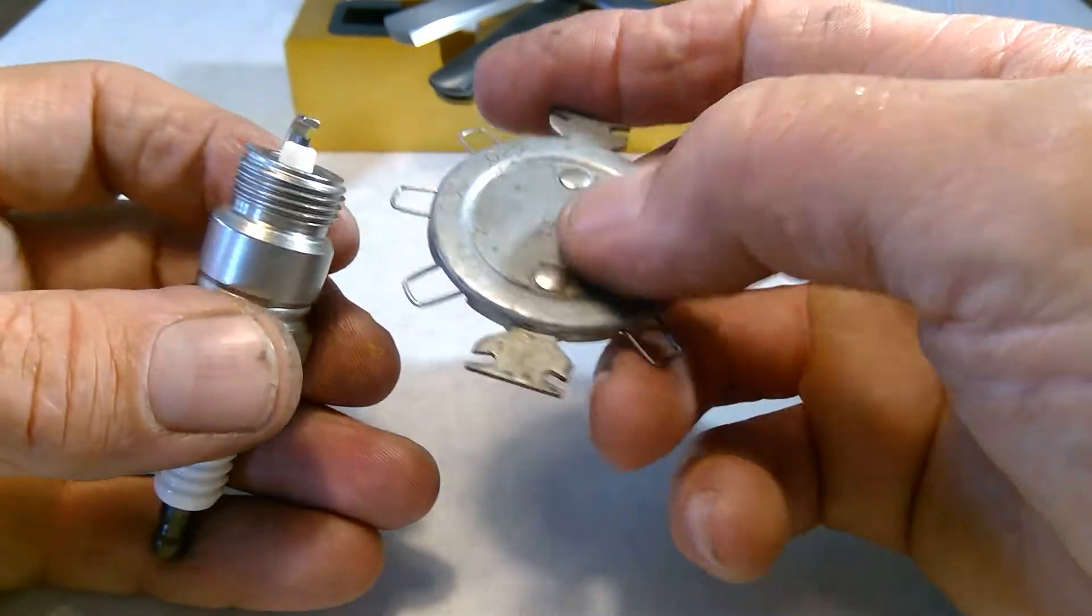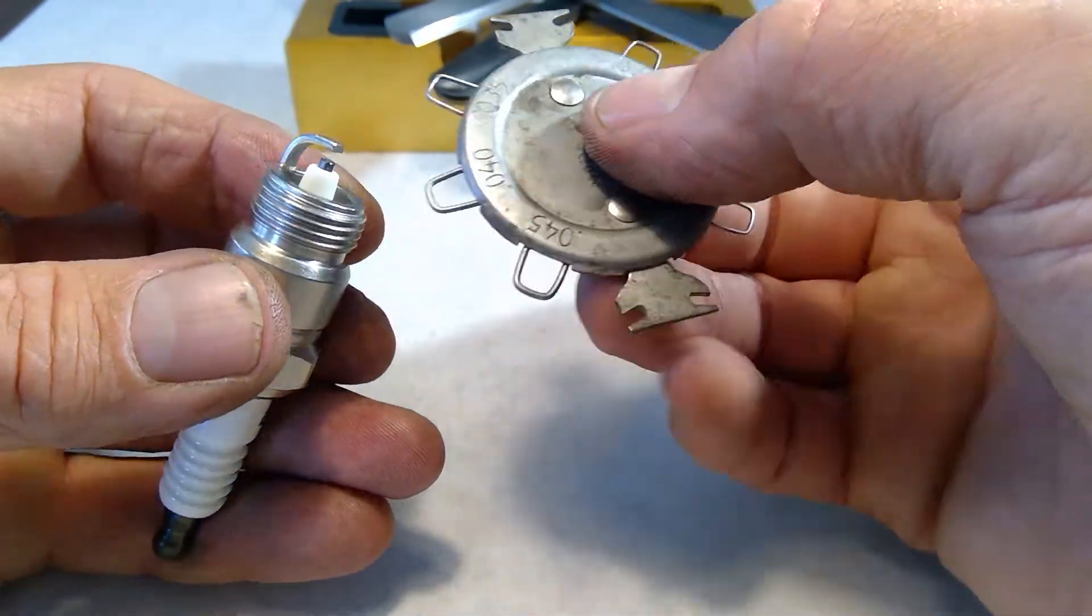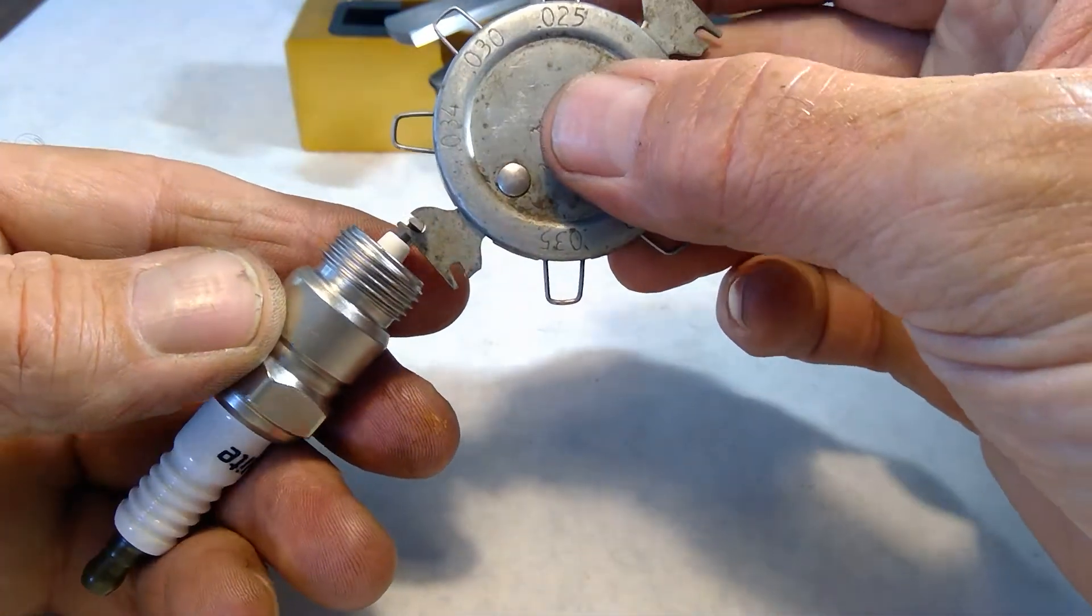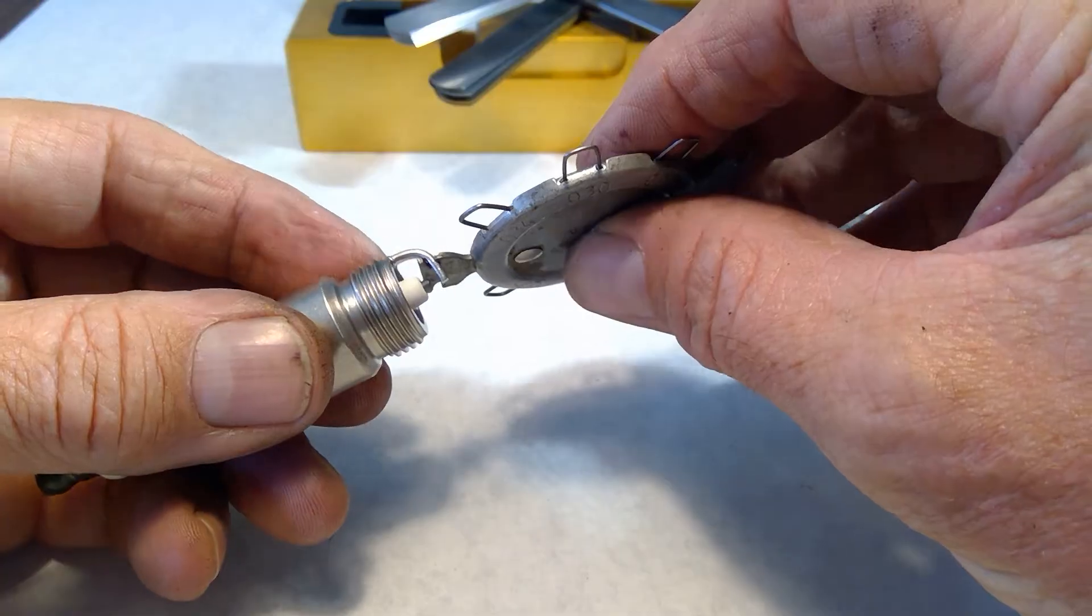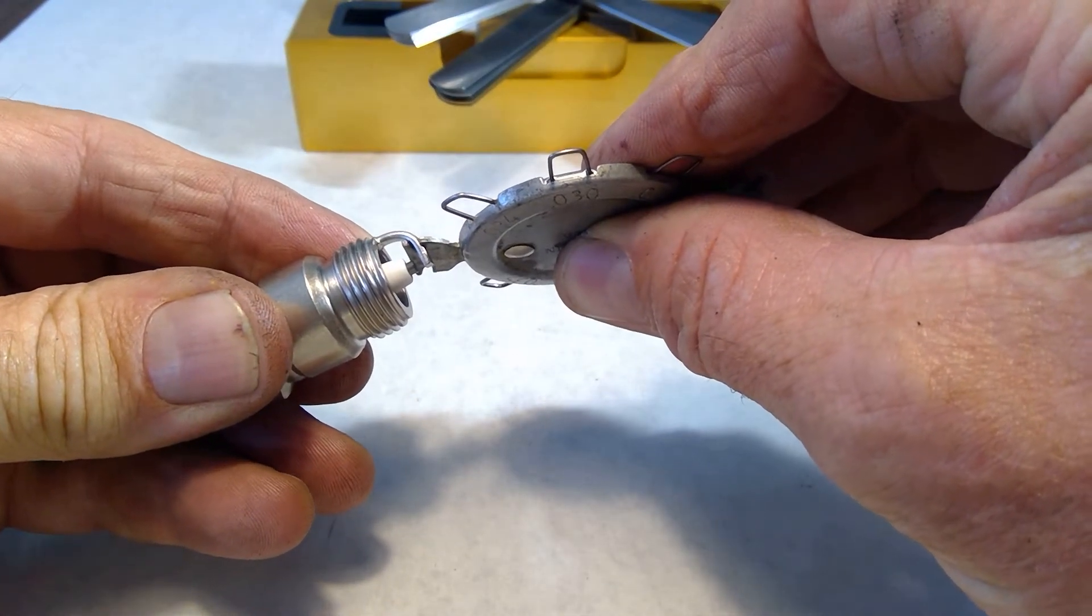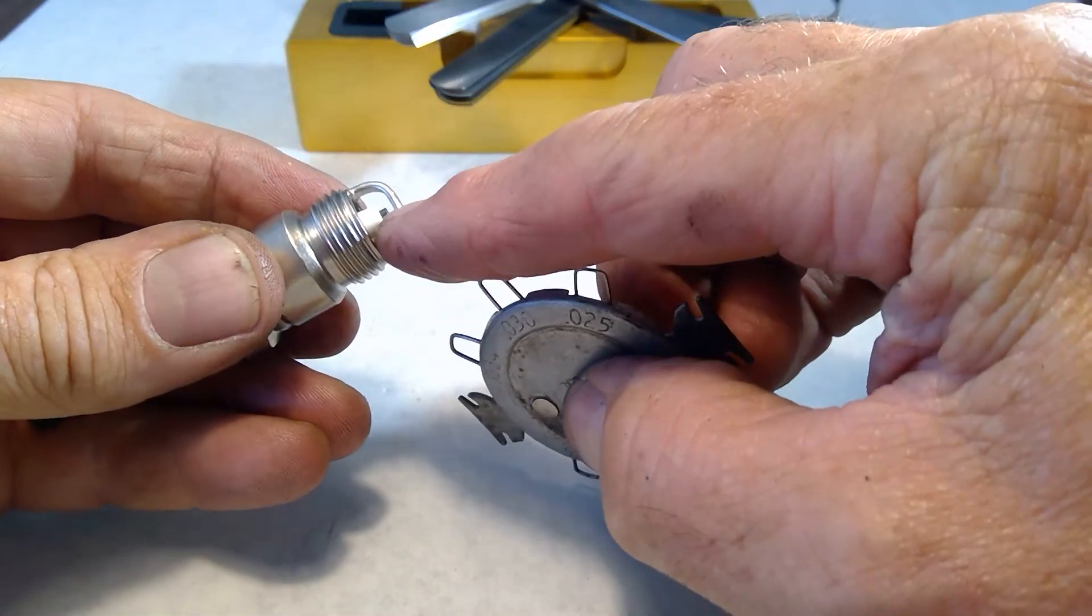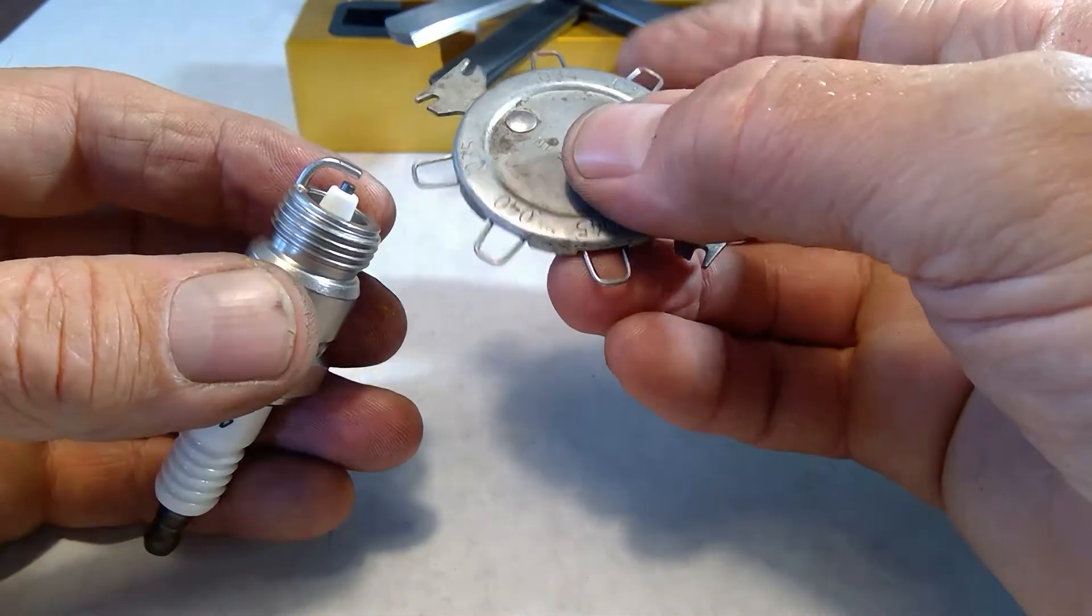40 thousandths of an inch is my target, so I go to 40 thousandths, and that's way too big. So, now I can take this, and I can close it by pushing the electrode towards the middle, and then we'll measure again.